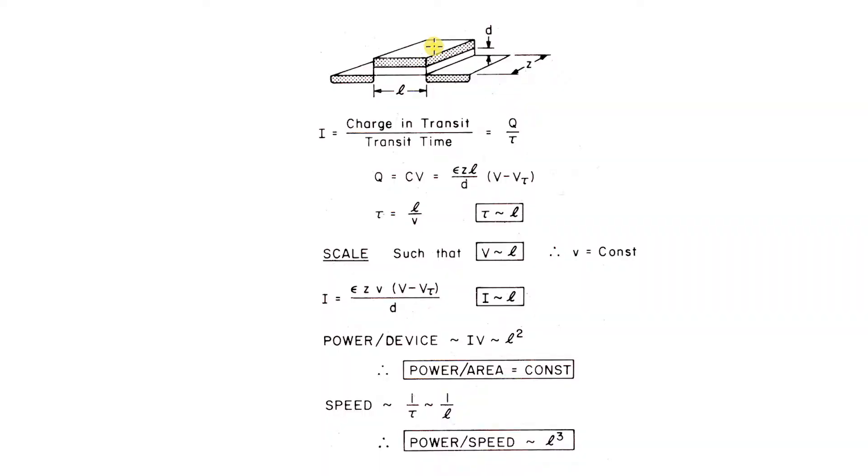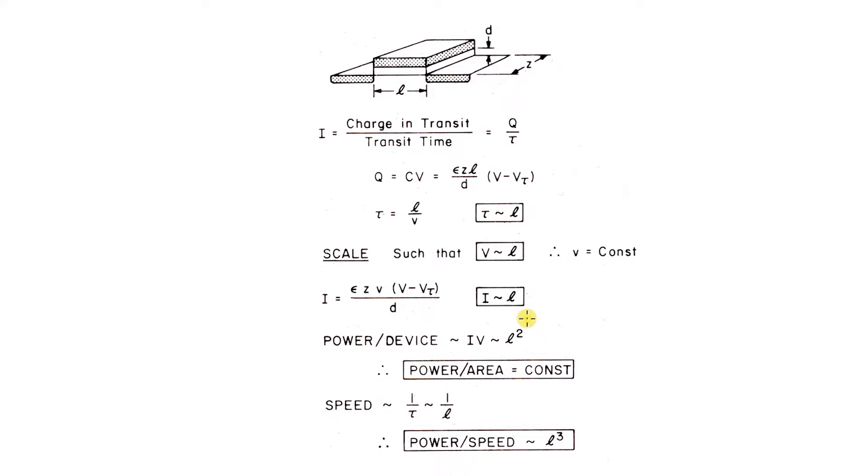We're going to shrink all the dimensions. But if you do that, the electric field — which is the voltage you put on the gate divided by the thickness — gets higher than the material can stand. So we scale the voltages down exactly with the dimensions. That keeps all the electric fields more or less the same, so it's physics we understand, and we're not changing too many things at once. If you do that, the power per device goes like the square. So if you scale it down by a factor of 10, the power will go down by a factor of 100. That means if we make a chip and put 100 times more transistors on it, it'll dissipate the same power.